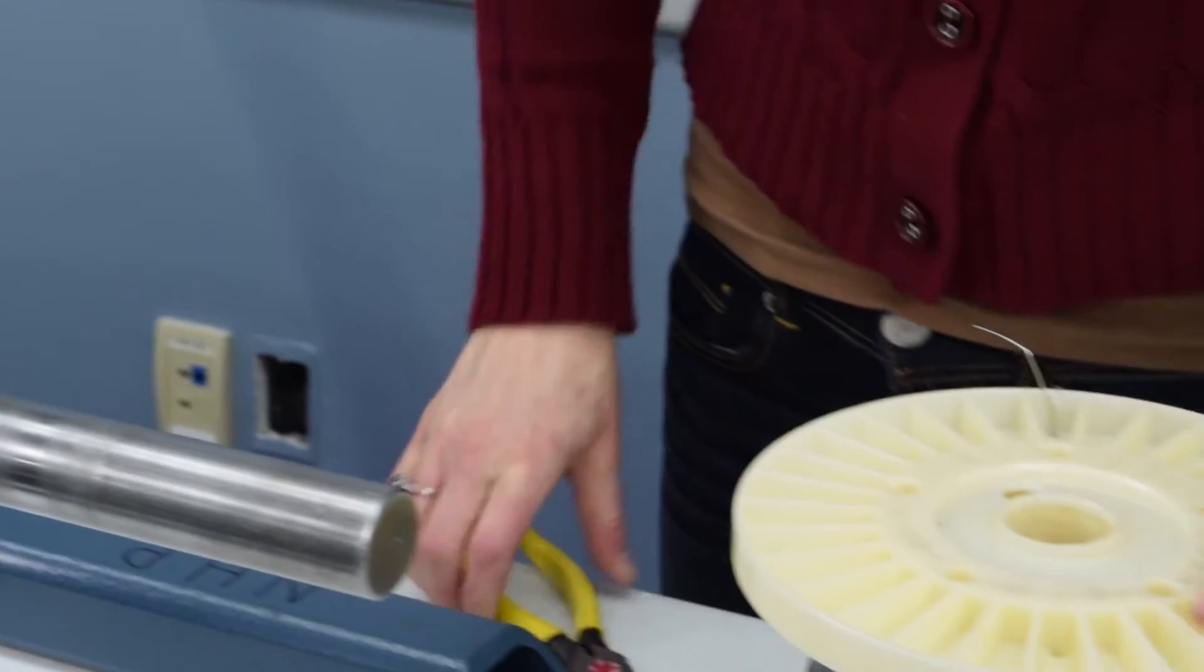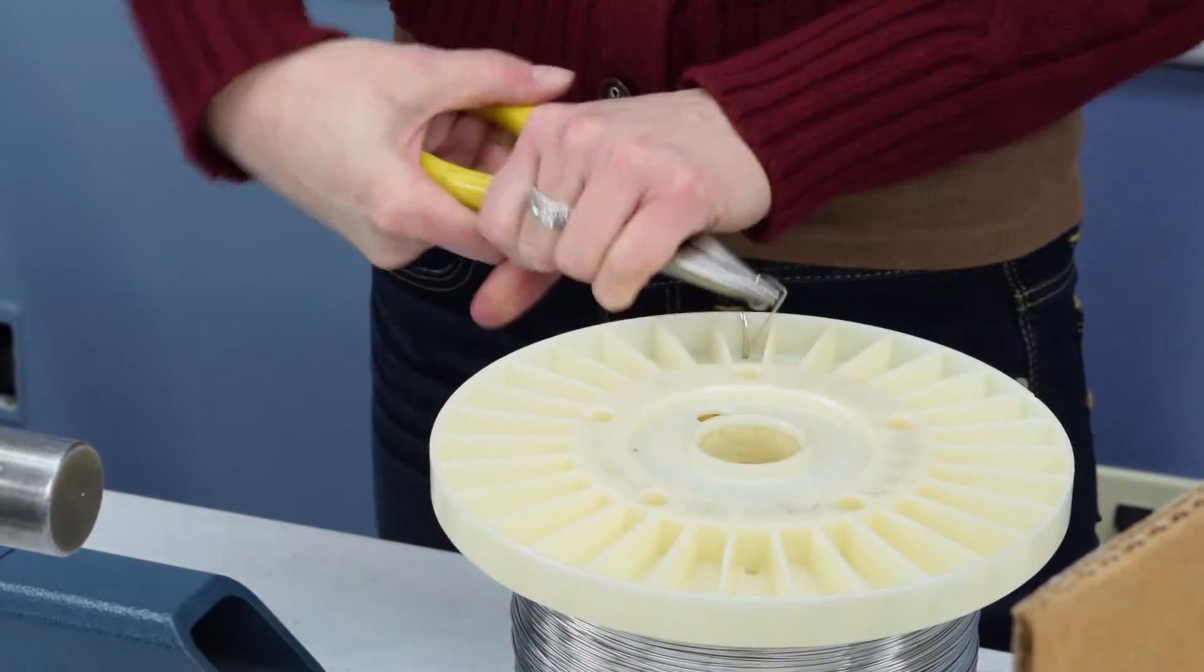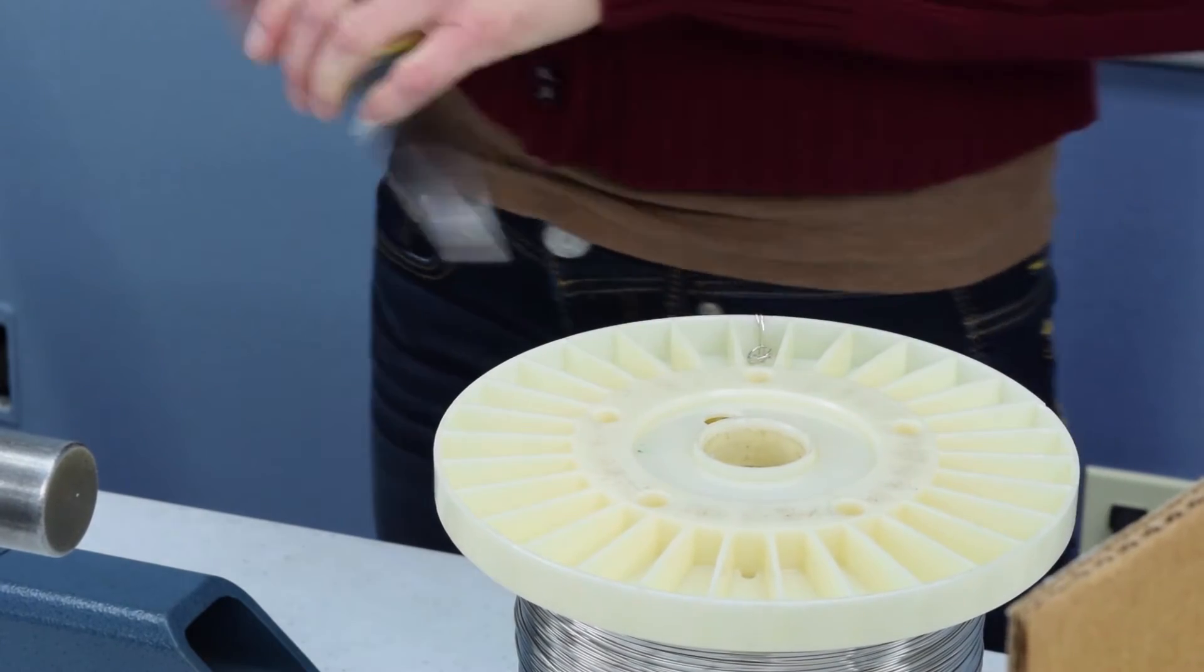Then, remove the spool from the lead off. Use pliers to twist the wire down out of harm's way and place the spool back into its original packaging.